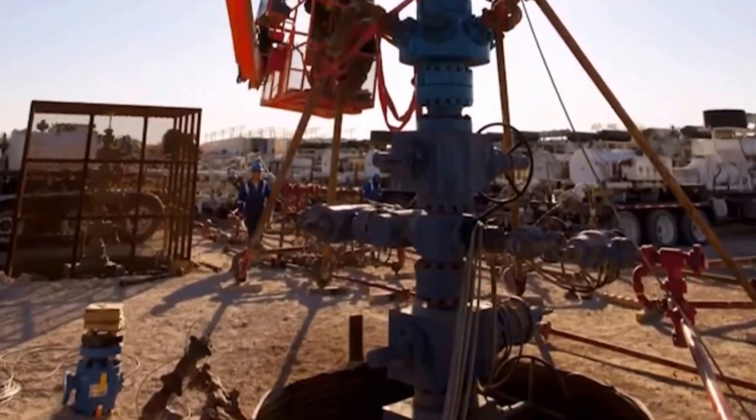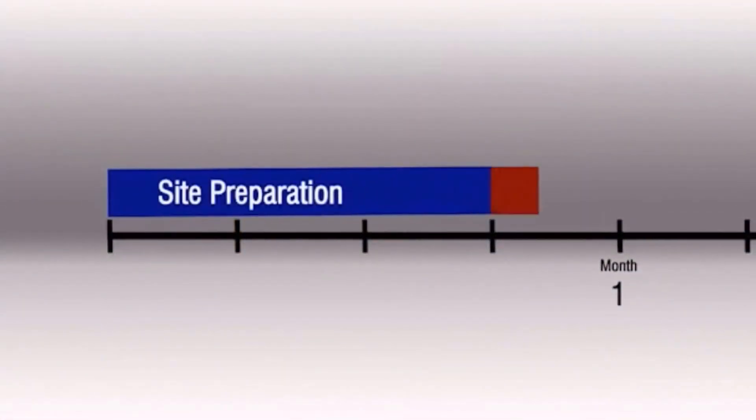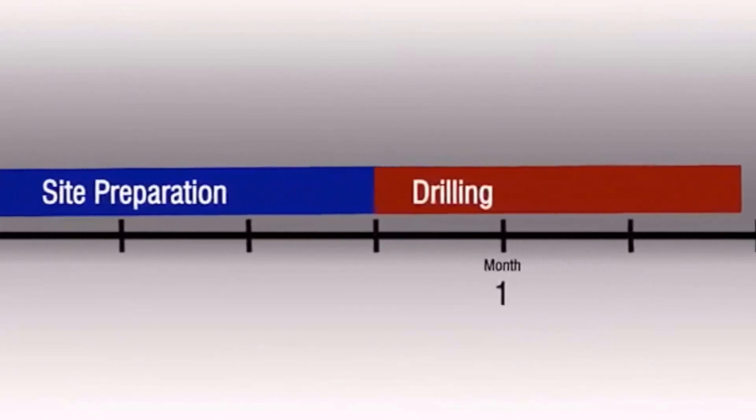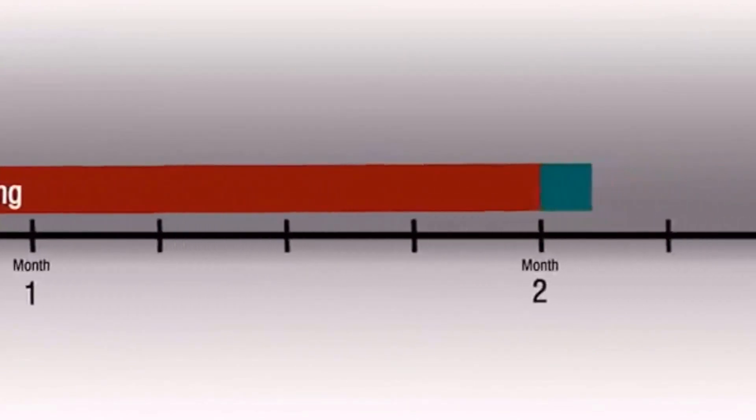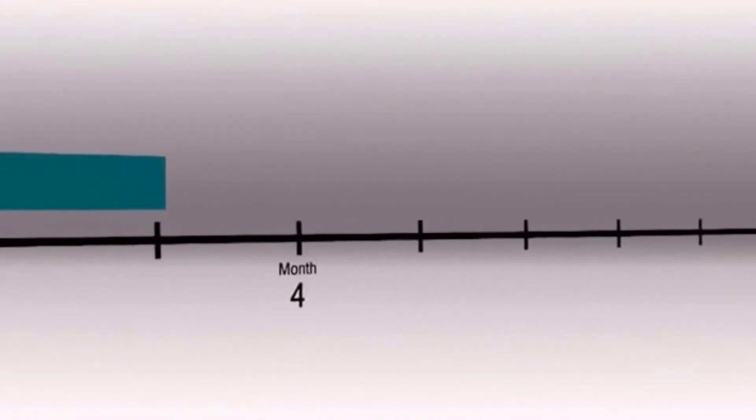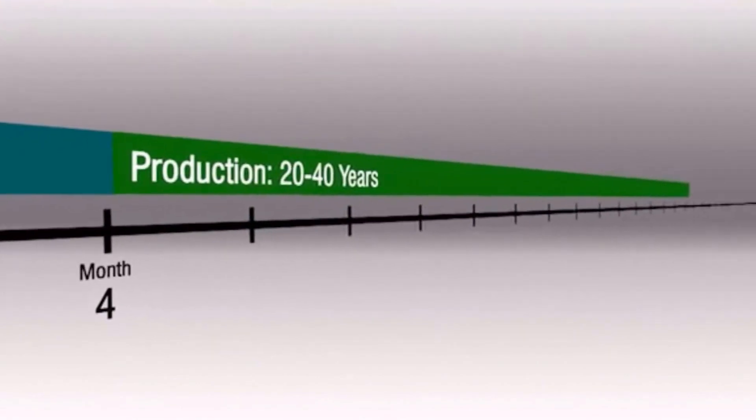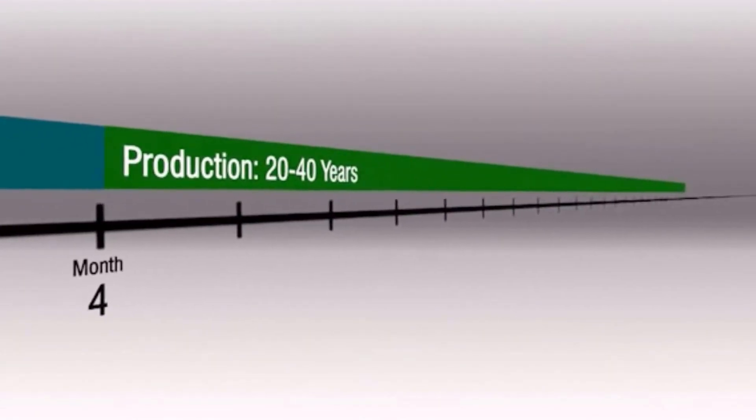The whole process of developing a well typically takes from three to five months, a few weeks to prepare the site, four to six weeks to drill the well, and then one to three months of completion activities, which includes one to seven days of stimulation. But this three to five month investment can result in a well that will produce oil or natural gas for 20 to 40 years or more.